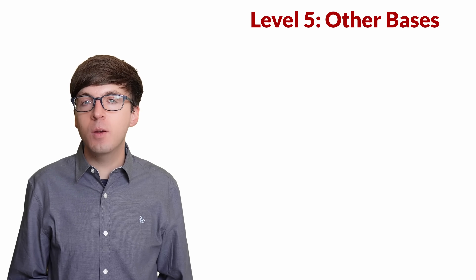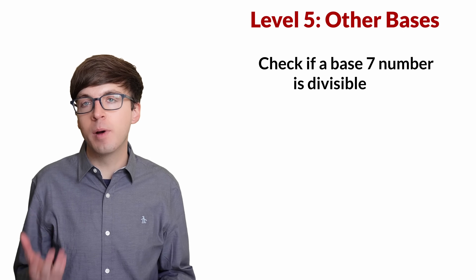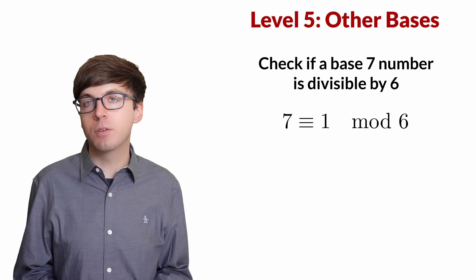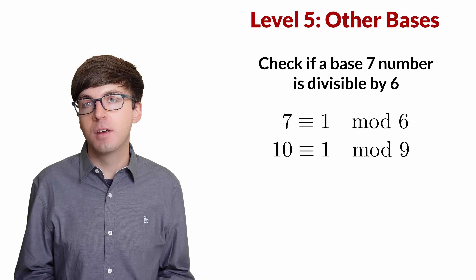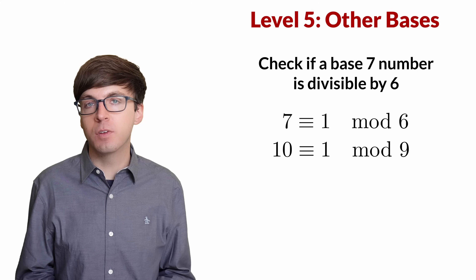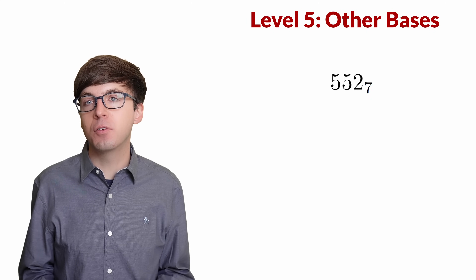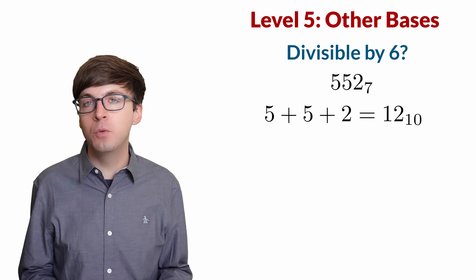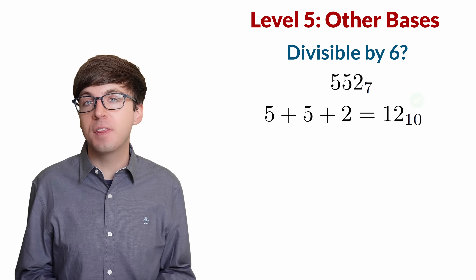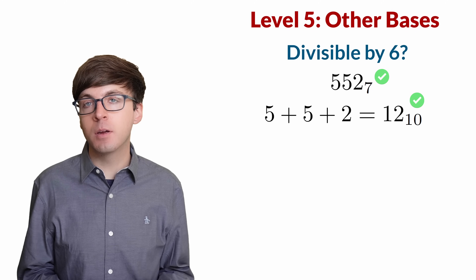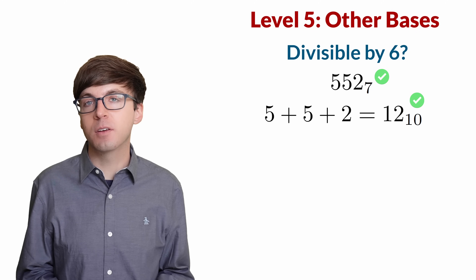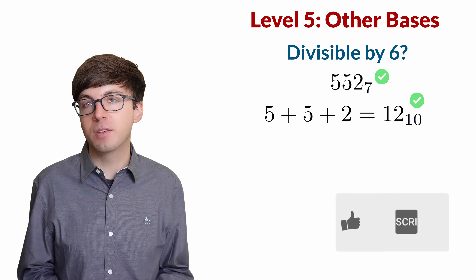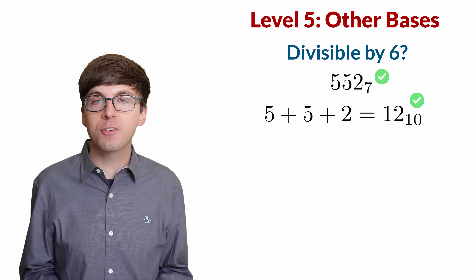As another example, say we want to check if a base 7 number is divisible by 6. When we divide 7 by 6, we get a remainder of 1 — just like our divisibility trick for 9 in base 10, where we add up the digits and see if that sum is divisible. Let's try the base 7 number 552: 5 plus 5 plus 2 equals 12 in base 10, which is divisible by 6, so the base 7 number 552 is also divisible by 6. Let us know in the comments what divisibility rules you come up with in base 10 or another base. Thanks for watching, and I'll see you next time.